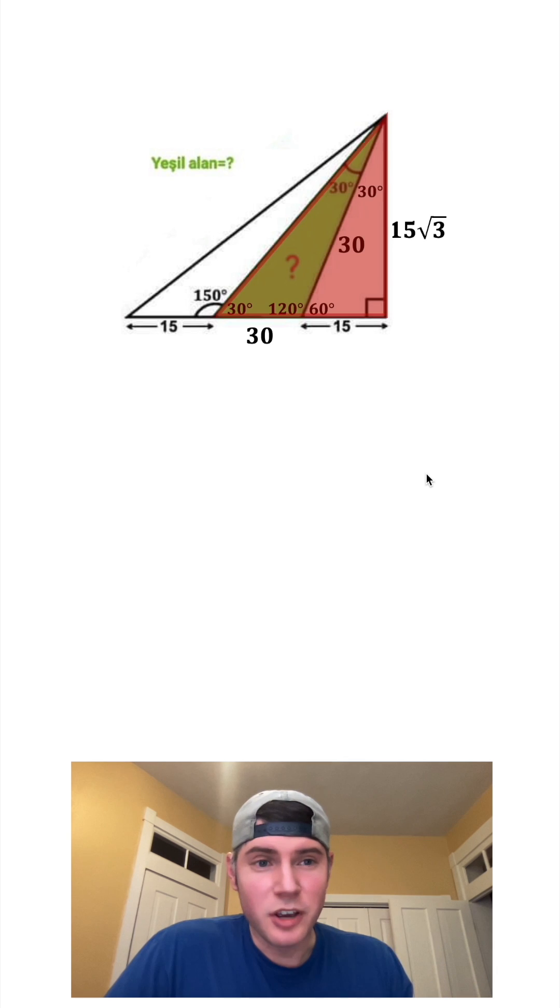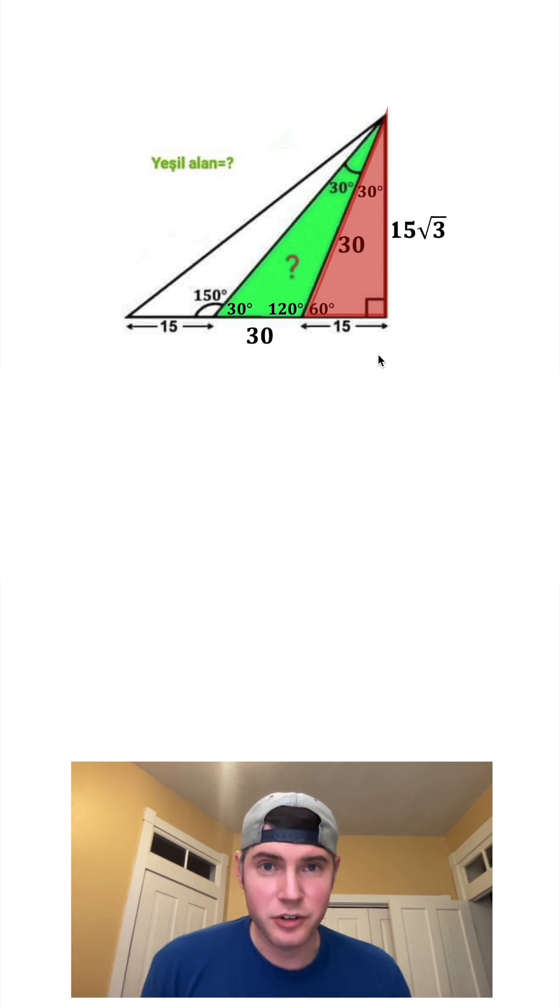Let's get rid of this and look at the whole triangle. So I'm thinking we take the area of this larger triangle here, subtract the area of this smaller triangle here, and the leftover will give us the area of the green triangle.